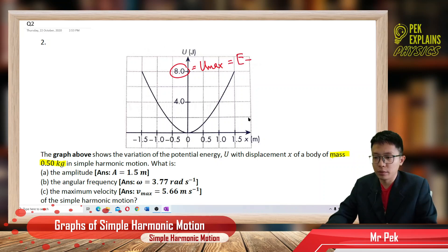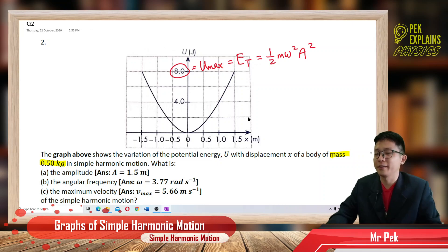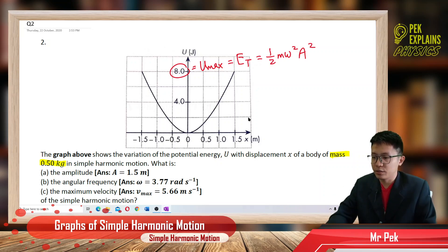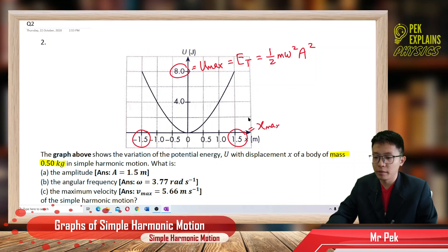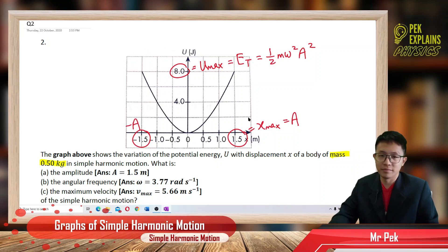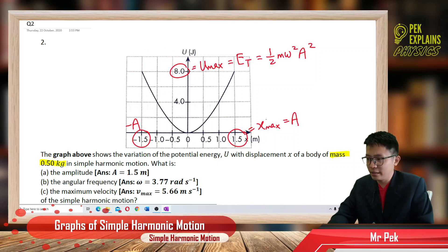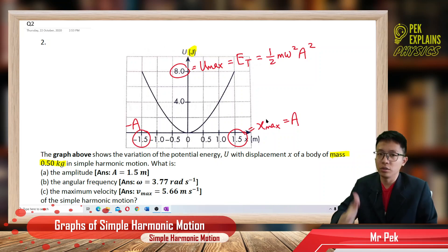The formula for total energy is half m omega squared times amplitude squared. The amplitude is the maximum displacement — when displacement is maximum, it is the amplitude, and the negative side is the negative amplitude.